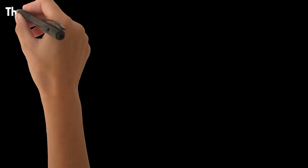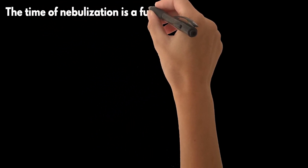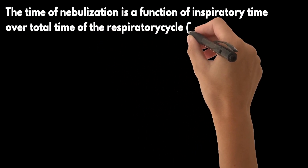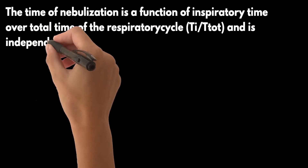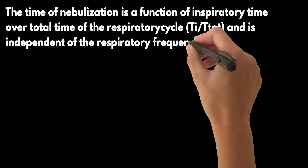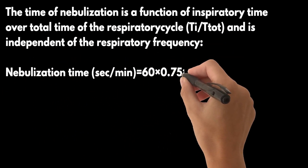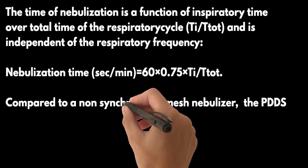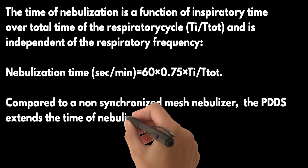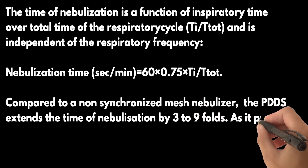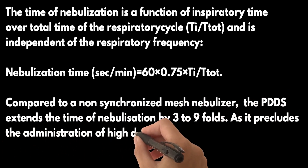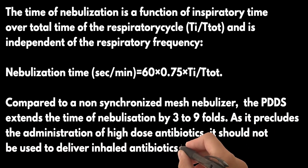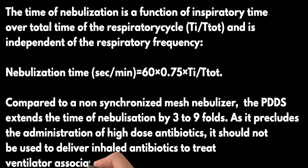The time of nebulization is a function of inspiratory time over total time of the respiratory cycle (Ti/Ttot) and is independent of respiratory frequency. Nebulization time in seconds per minute equals 60 × 0.75 × Ti/Ttot. Compared to a non-synchronized mesh nebulizer, the synchronized mesh nebulizer (PDDS) extends the time of nebulization by three to nine folds. As it precludes the administration of high-dose antibiotics, it should not be used to deliver inhaled antibiotics to treat ventilator-associated pneumonia.